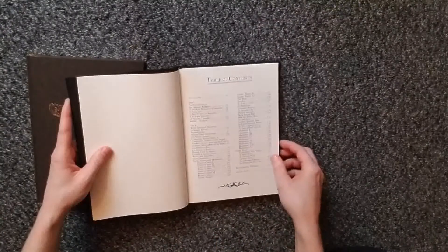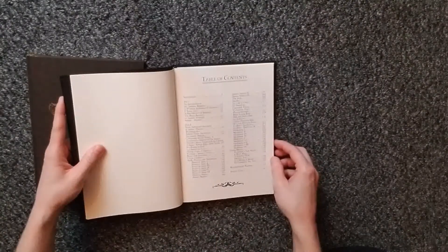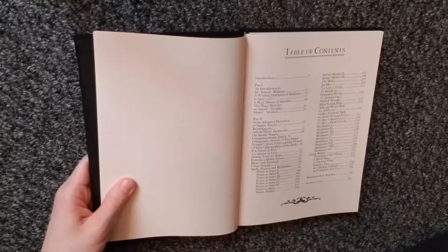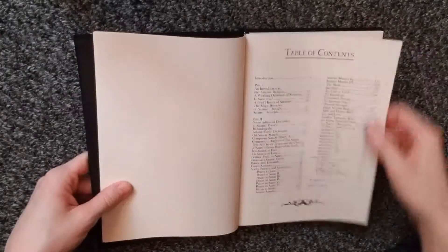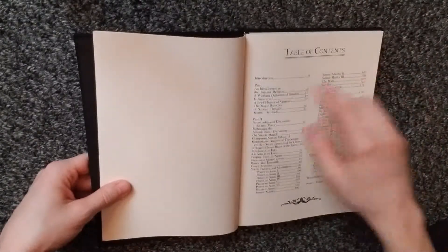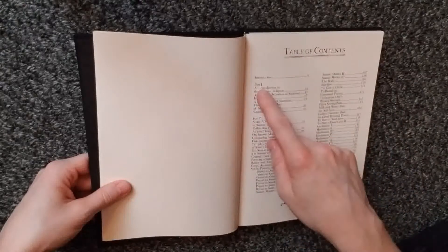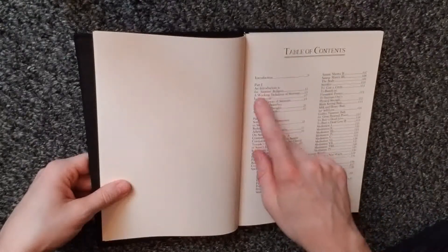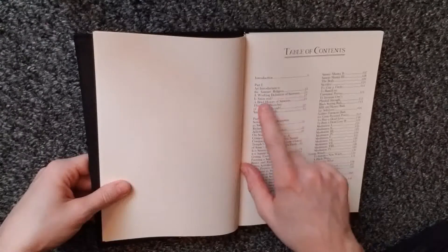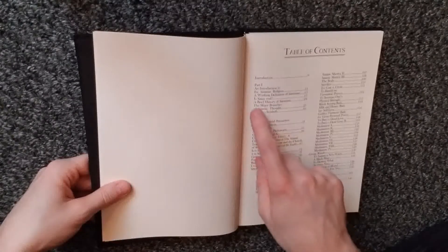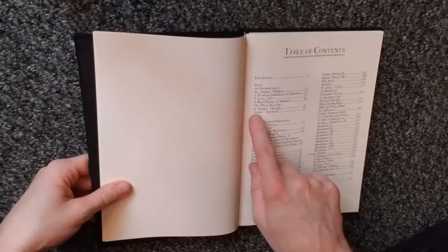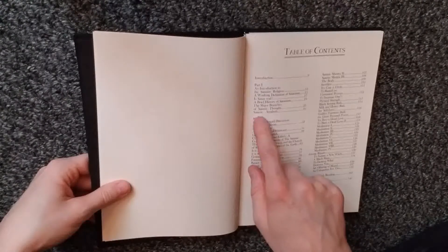Look at this table of contents. Hopefully y'all can see this, but if not, oh well, I tried. Introduction. Part 1, An Introduction to the Satanist Religion, The Working Definition of Satanism, Is Satan Real, A Brief History of Satanism, The Major Branches of Satanic Thought, Satanic Symbols.